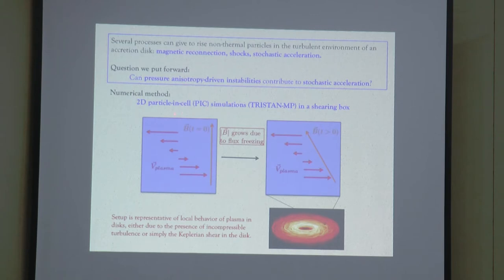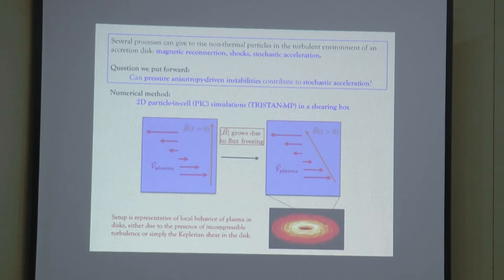The picture we have in mind is to take a small piece of plasma in the accretion disk where the magnetic field is growing because of turbulence — maybe due to the magnetorotational instability, or the large-scale evolution or differential rotation of the disk. For whatever reason, this magnetic field is growing, and we simulate that by imposing a shear velocity in the plasma.